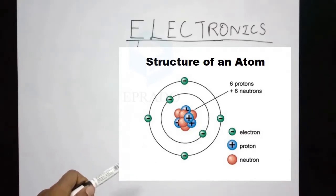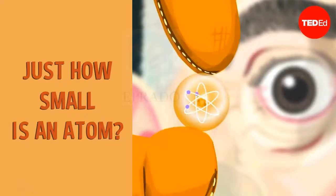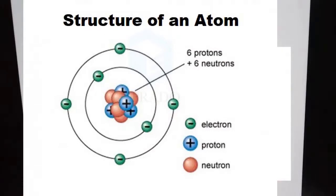Atoms are very tiny. Size of an atom is 10 to the power minus 8 centimeter, that is 0.0000001 centimeter. So it is very small in size.